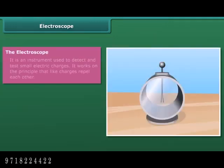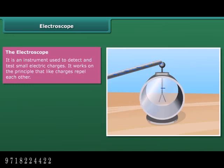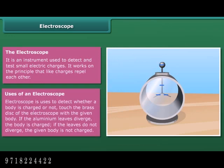The electroscope is an instrument used to detect and test small electric charges. It works on the principle that like charges repel each other. To detect whether a body is charged, touch the brass disc of the electroscope with the given body. If the aluminium leaves diverge, the body is charged. If the leaves do not diverge, the body is not charged.